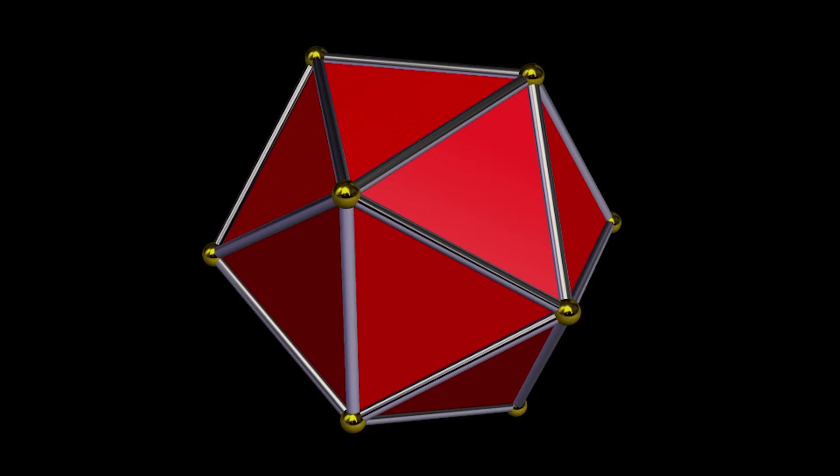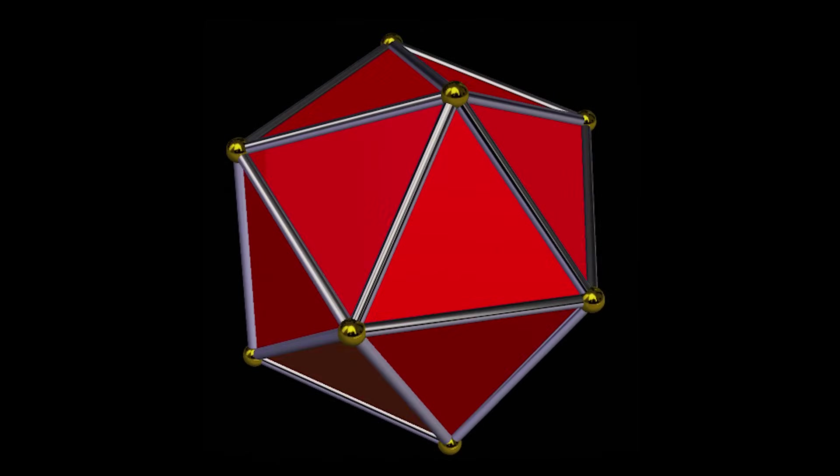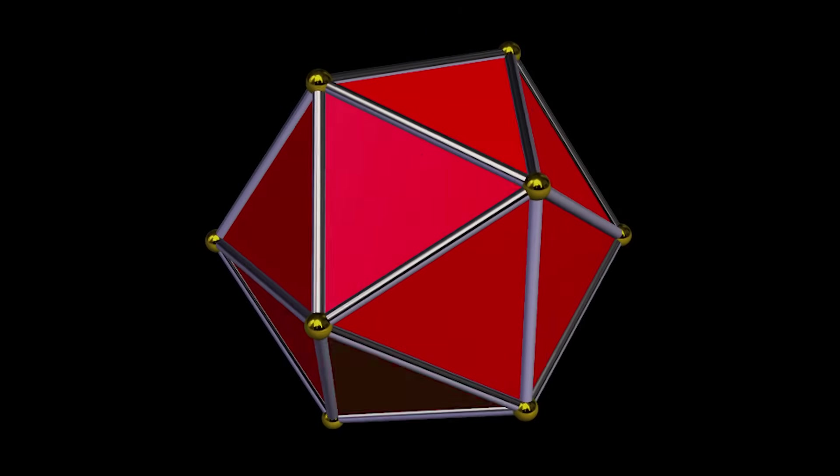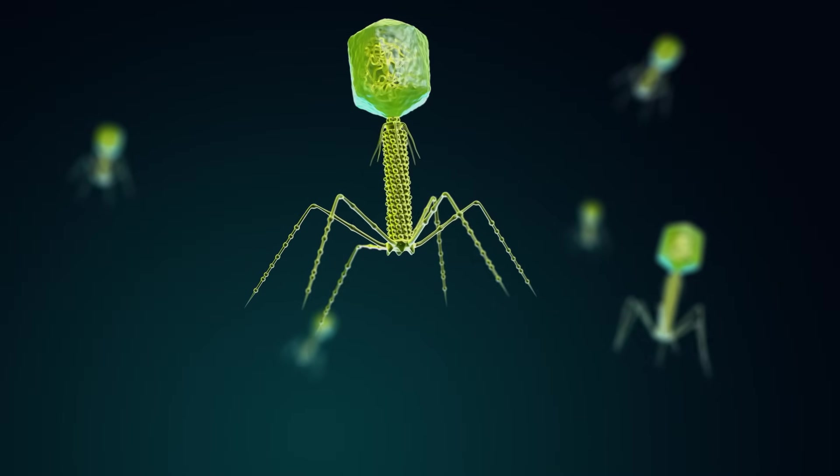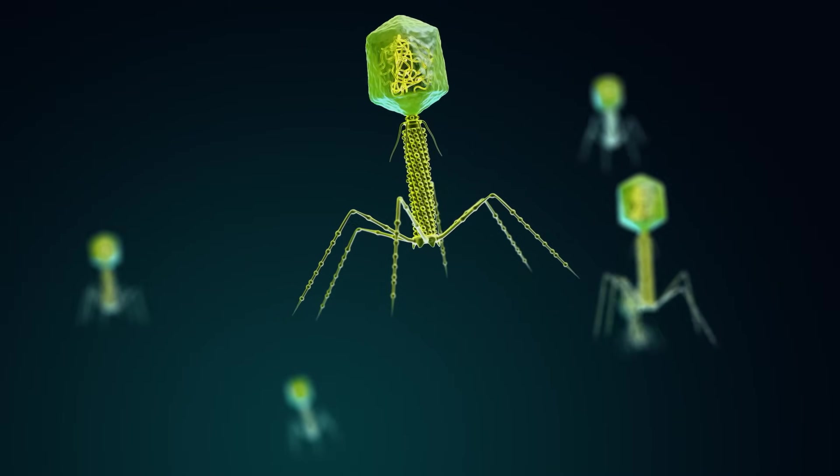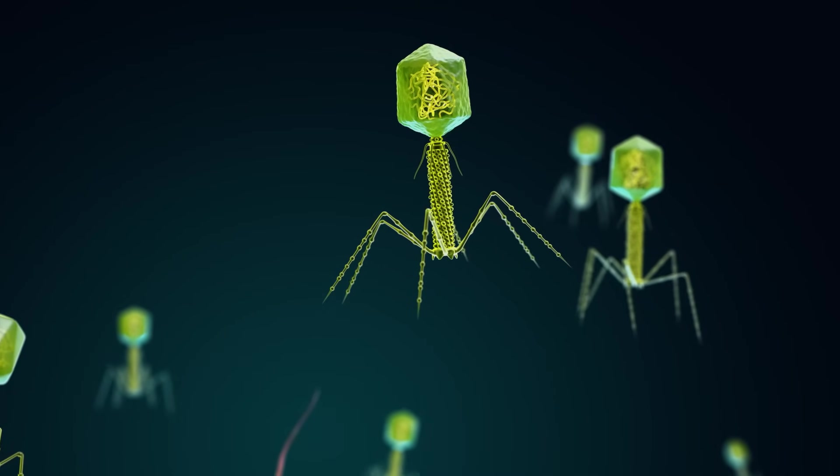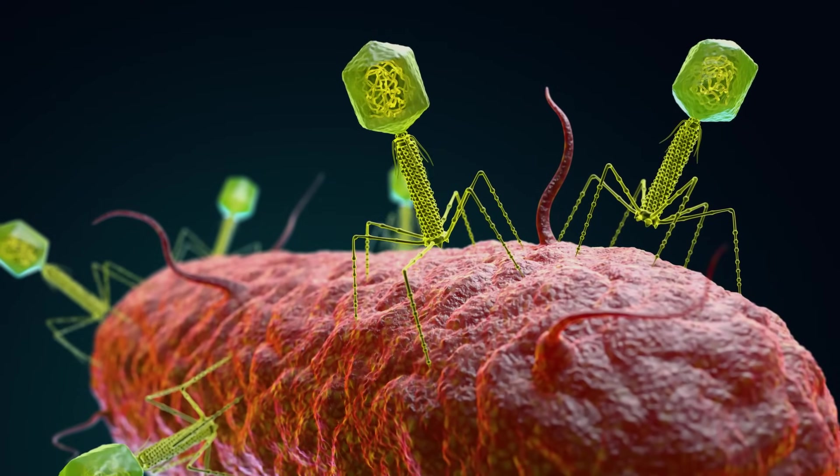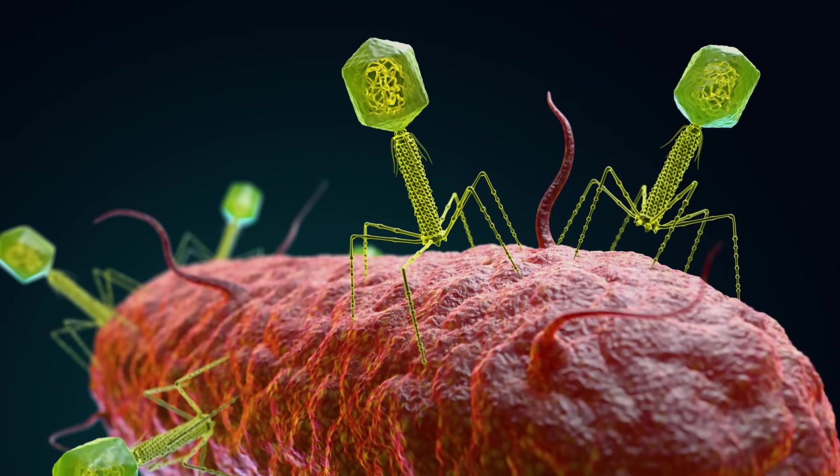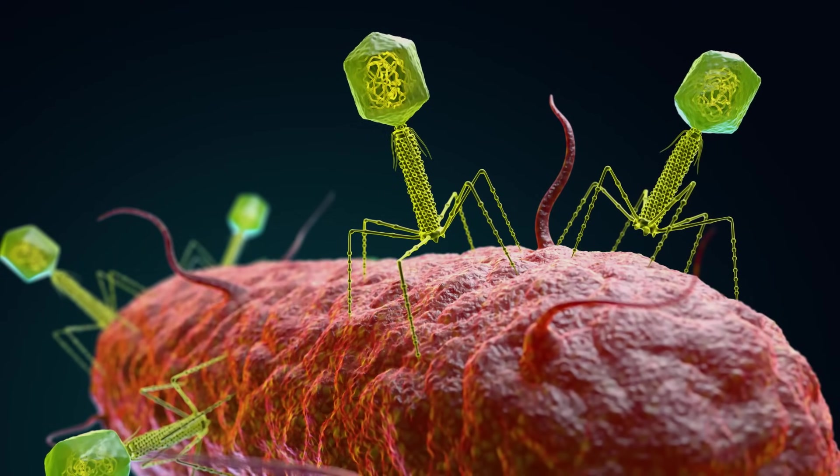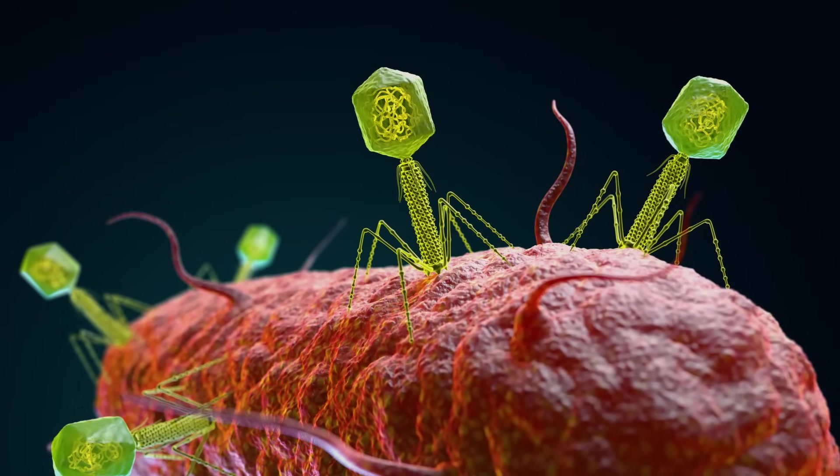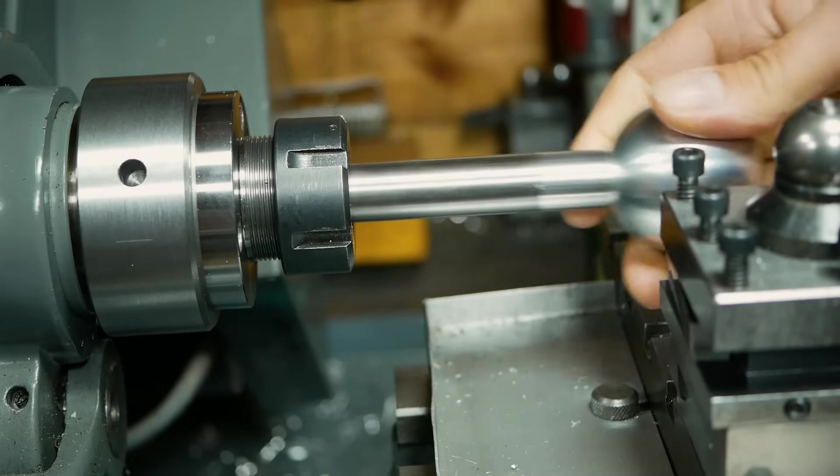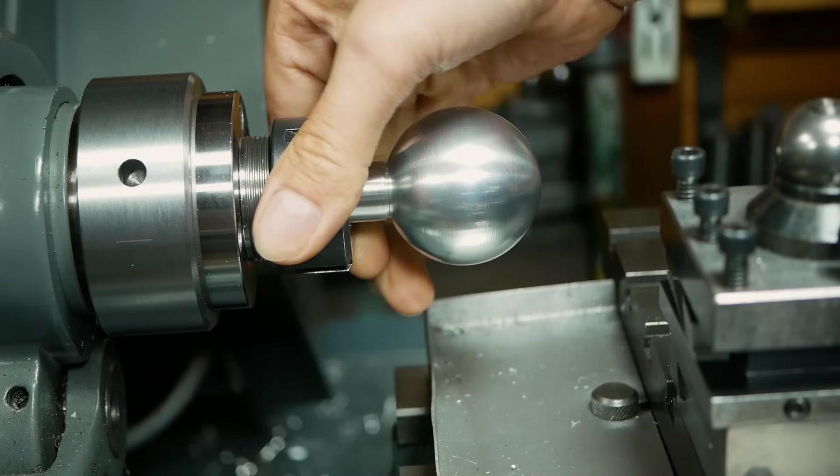Icosahedrons are comparatively rare in nature, but are a common shape for viruses, especially bacteriophages. These are viruses that infect bacteria. It's estimated that there are more than 10 to the 31 bacteriophages on the planet. More than every other living creature on Earth combined. Bacteriophages reproduce by injecting the DNA from their icosahedron-shaped head into a bacterium, where they hijack the host's protein production, using it to replicate the virus instead.